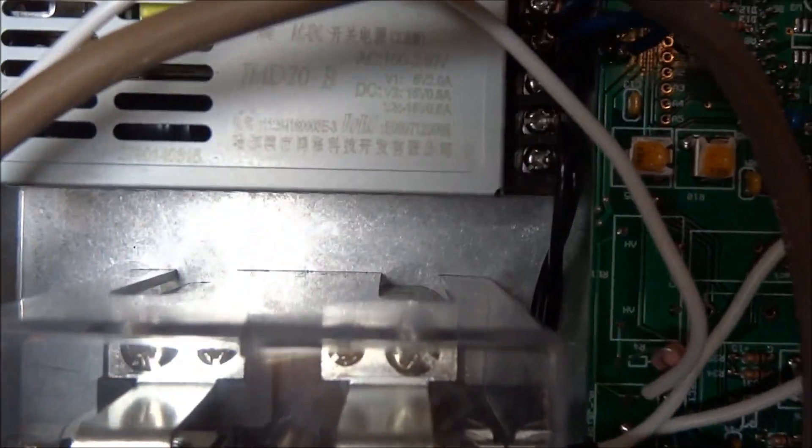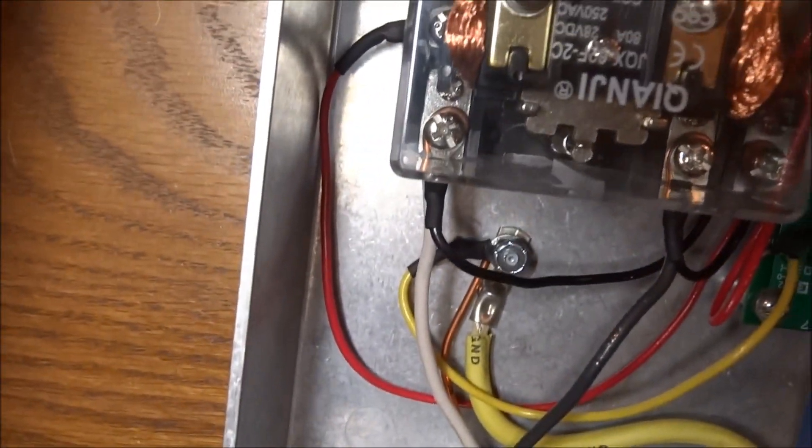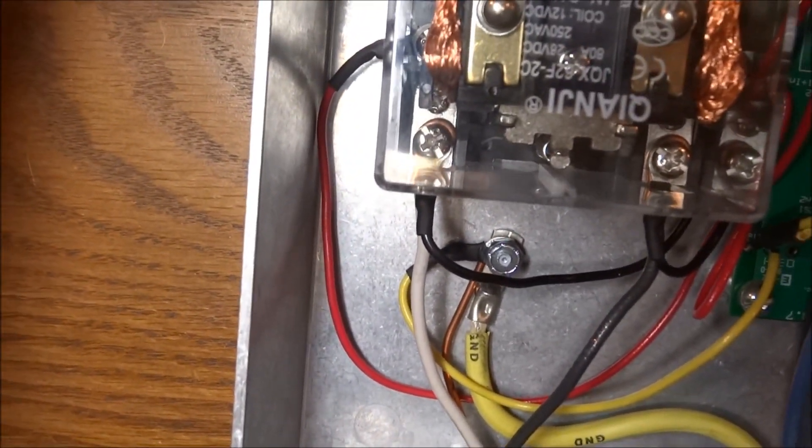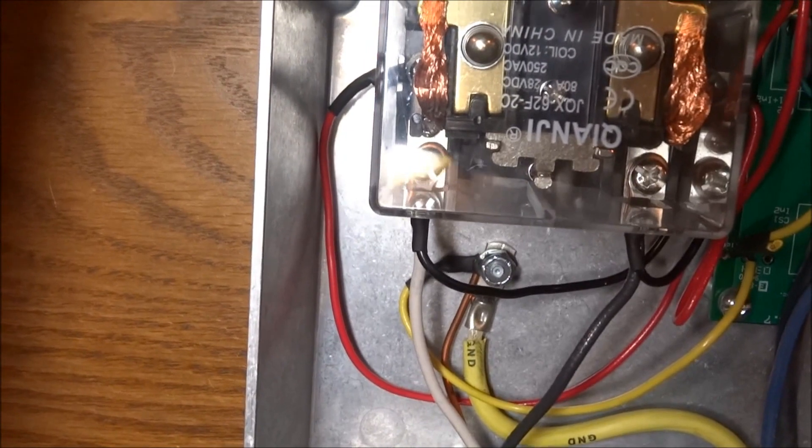Those black two wires are for AC. Those go down and connect to your input wires from your outlet or power supply.